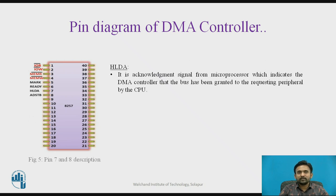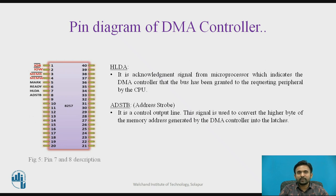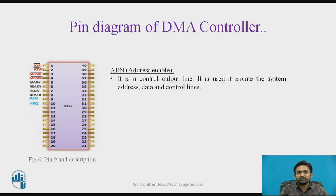HLDA is the acknowledgement of the hold signal requesting generated from the peripheral. About the next pin, ADSTB — address strobe — it is a control output line. This signal is used to latch the higher byte of the memory address generated by the DMA controller. The AEN pin is also a control output line used to isolate the system address, data and control lines. It demultiplexes the address and data lines.